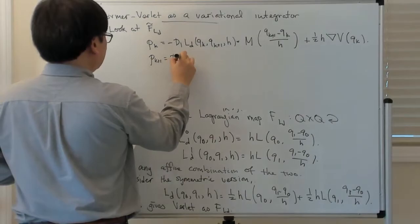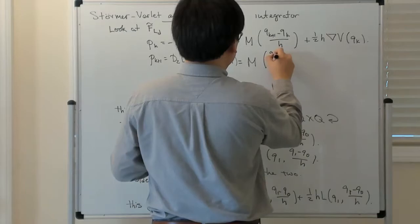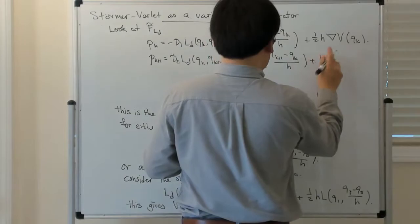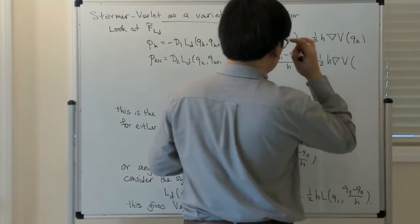Then p_{k+1} equals D2 LD(Q_k, Q_{k+1}, h), which is again mass times that velocity-like term (Q_{k+1} minus Q_k)/h, minus one-half h times the gradient of the potential evaluated at Q_{k+1}.